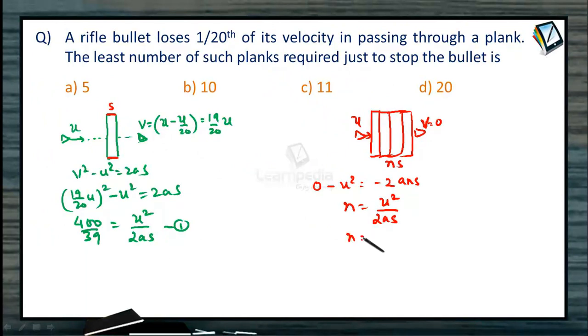Directly we can substitute: n = 400/39, or number of planks required is 10.25.